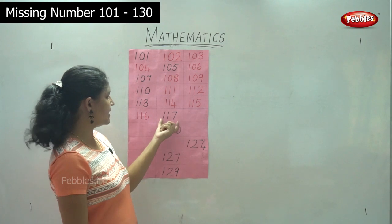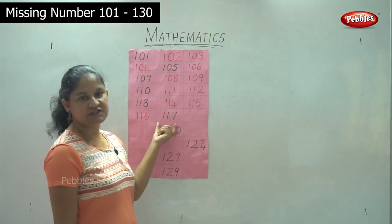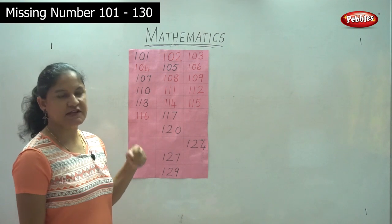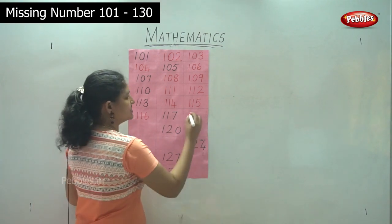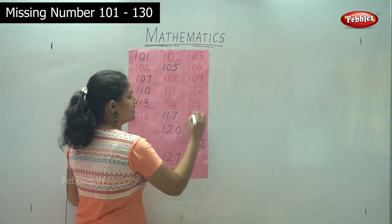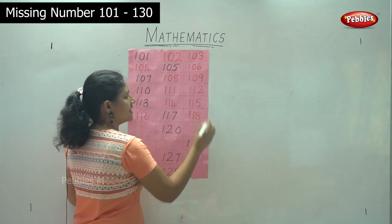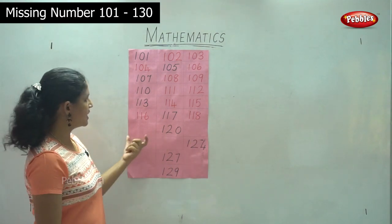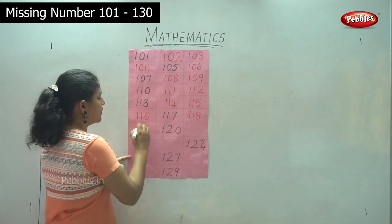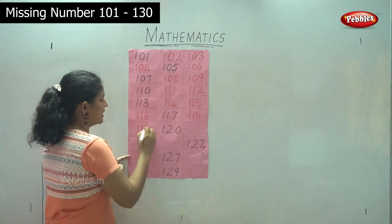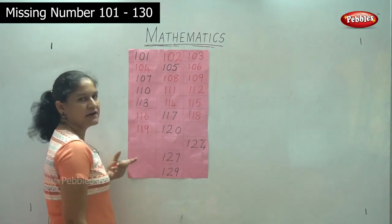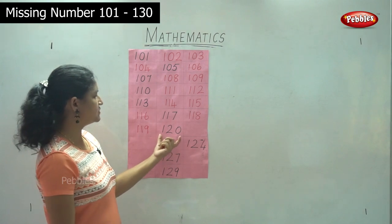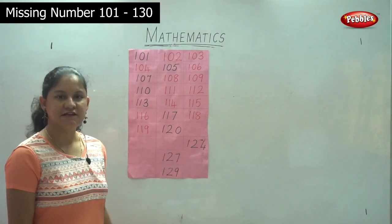We already have 117. Let us see what is the next number — it is 118. And after 118 comes 119. Then we have 120.